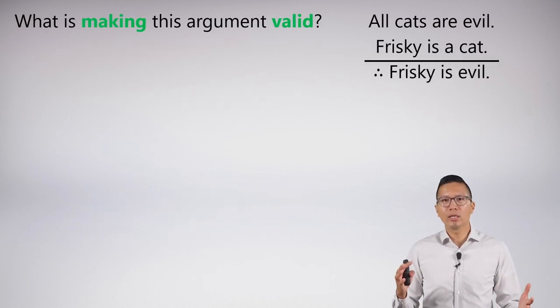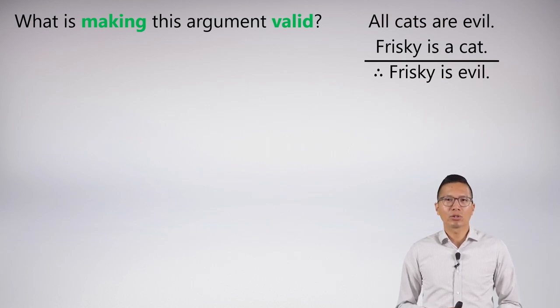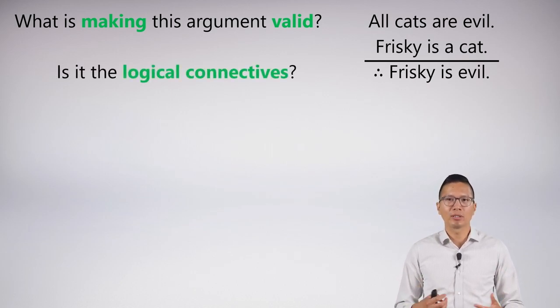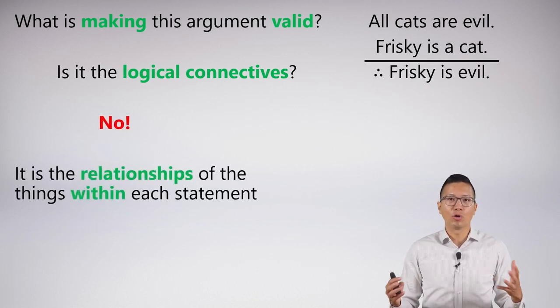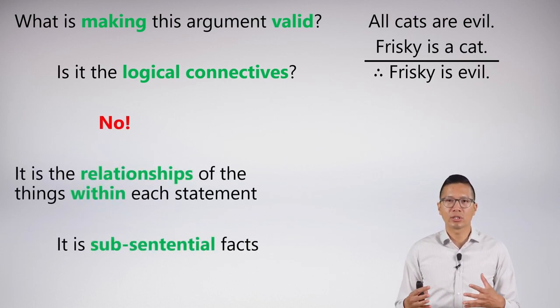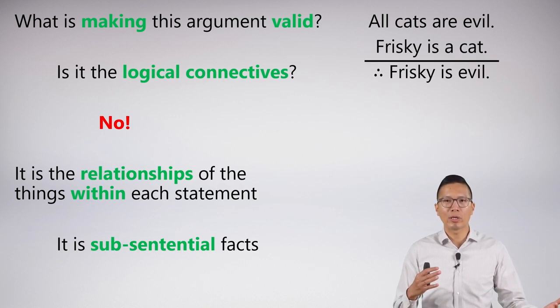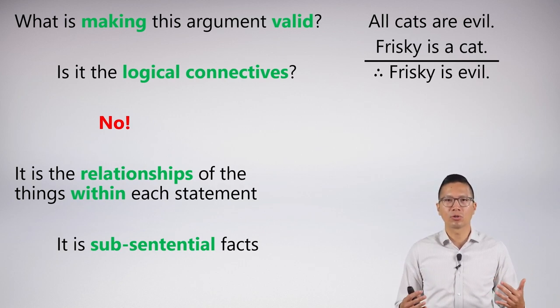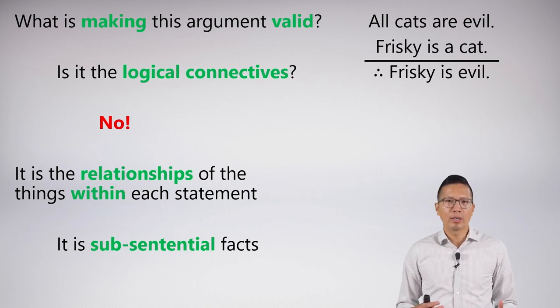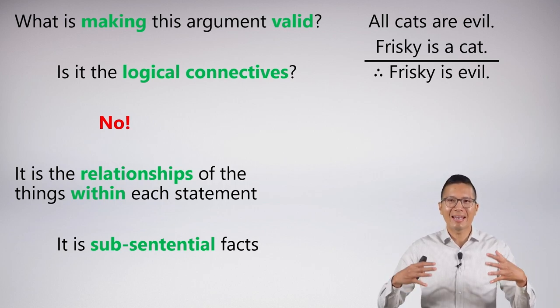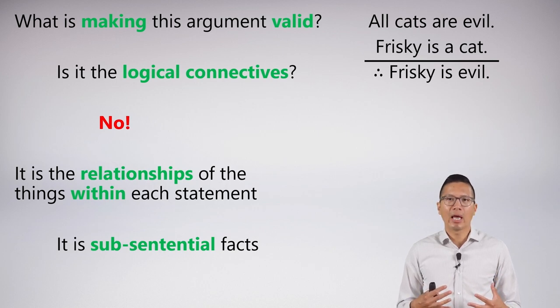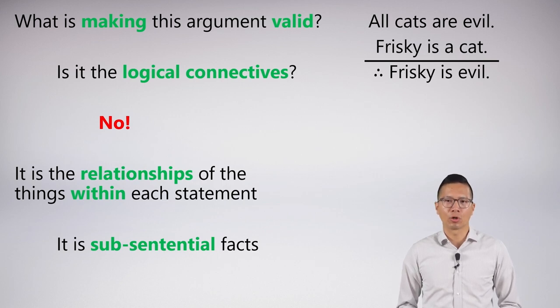So when we look at the cats are evil, Frisky argument, we can ask what is really making this argument valid? Is it the logical connectives that are in this argument? And you can see that the answer is no. One of the reasons why it's obvious is there are no real logical connectives here. These are just plain atomic statements. And that's why we couldn't assess the validity using sentential logic. So what's going on is it's actually the relationships of the things within the statements themselves. And we can call these sub-sentential facts that is really driving the validity of this argument.